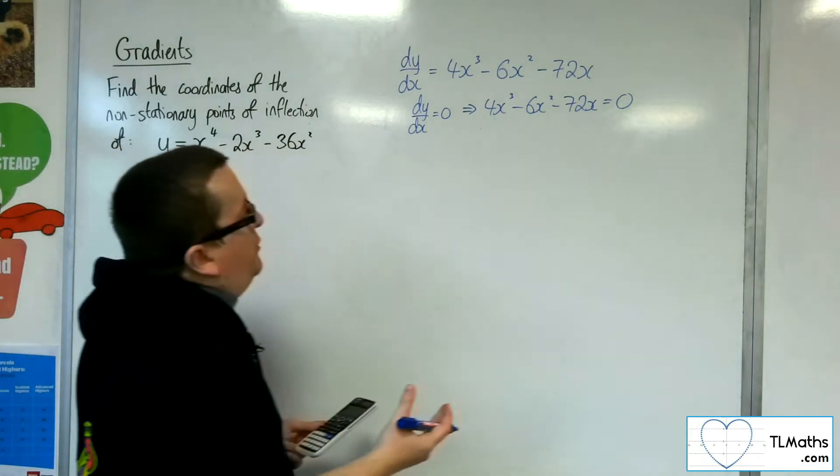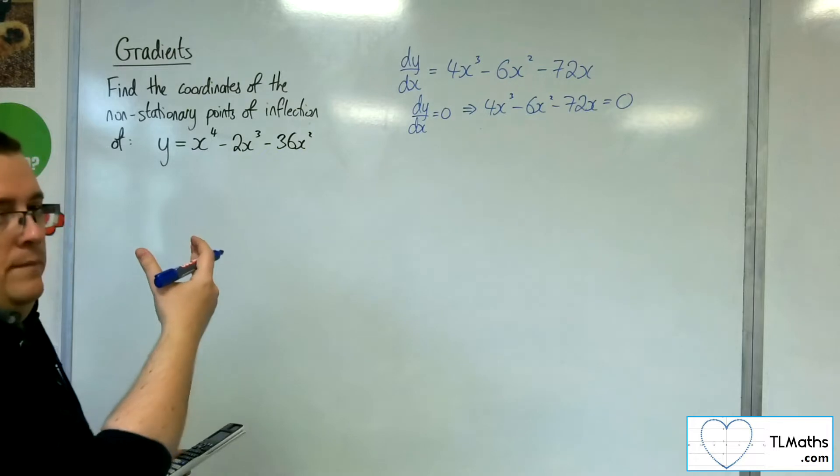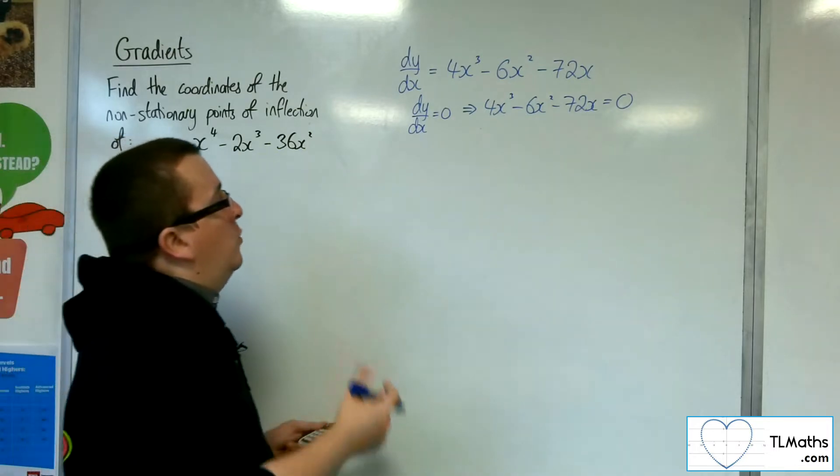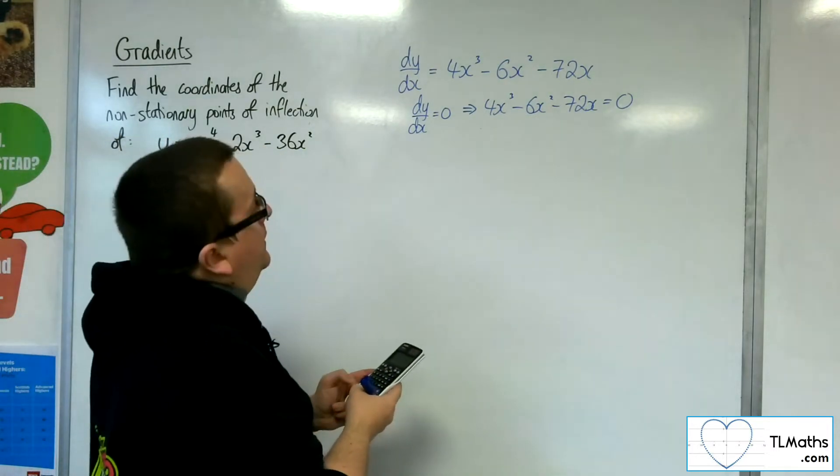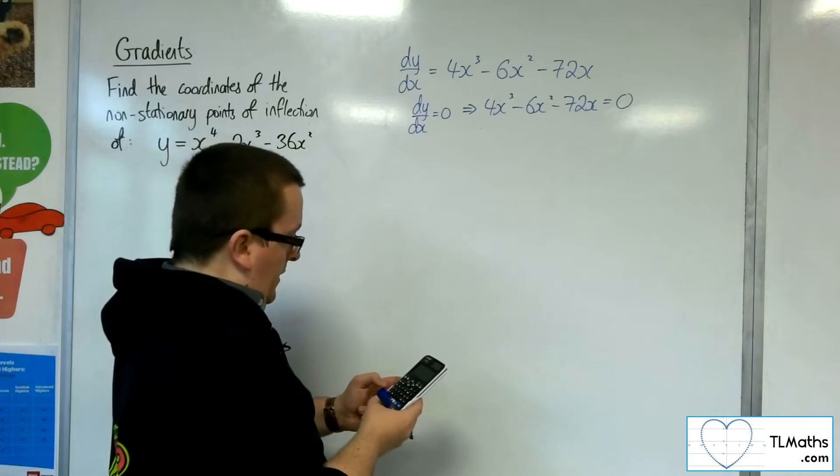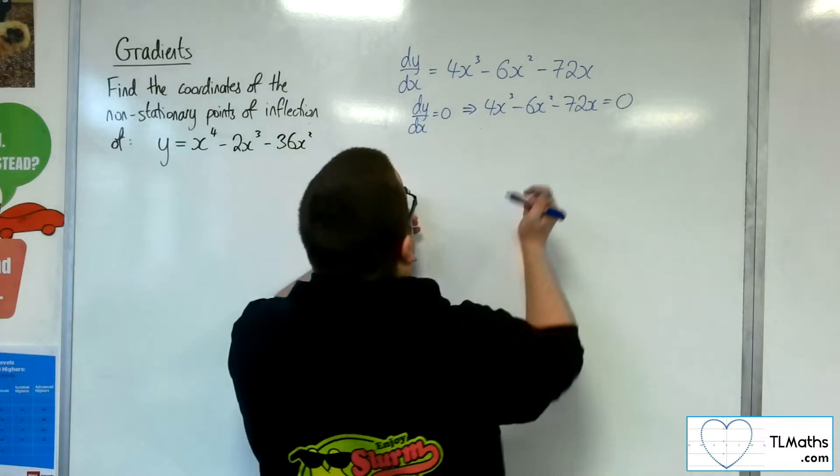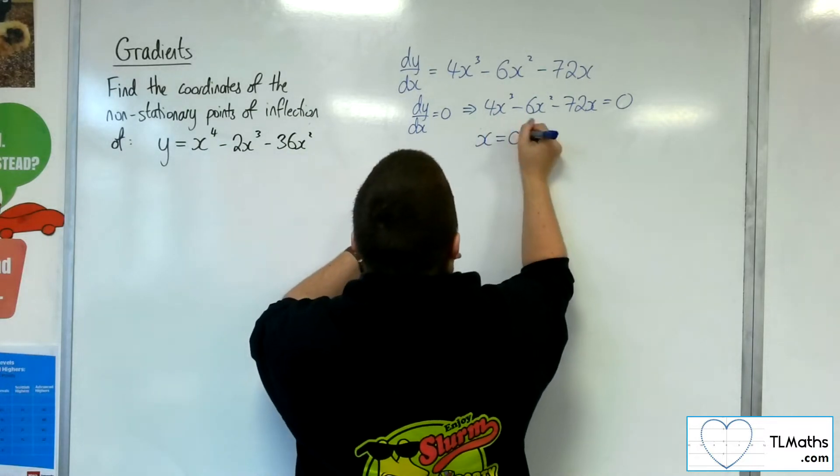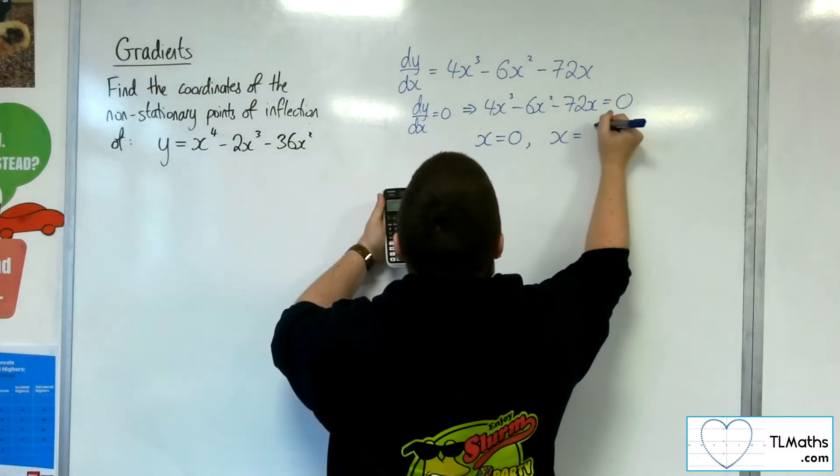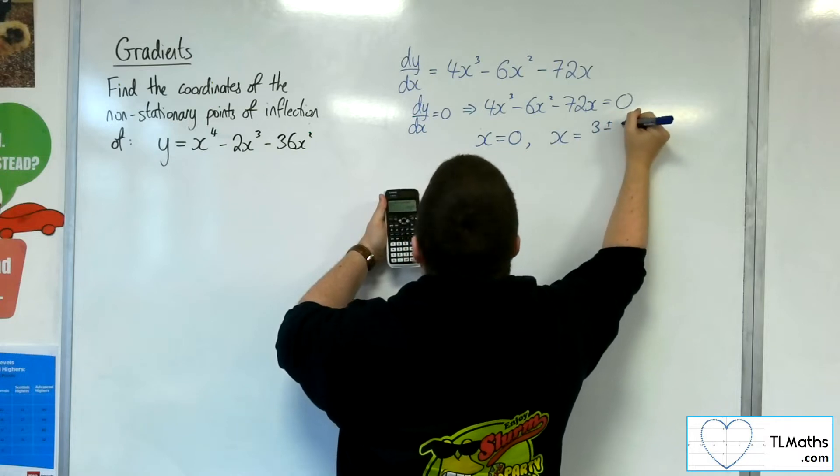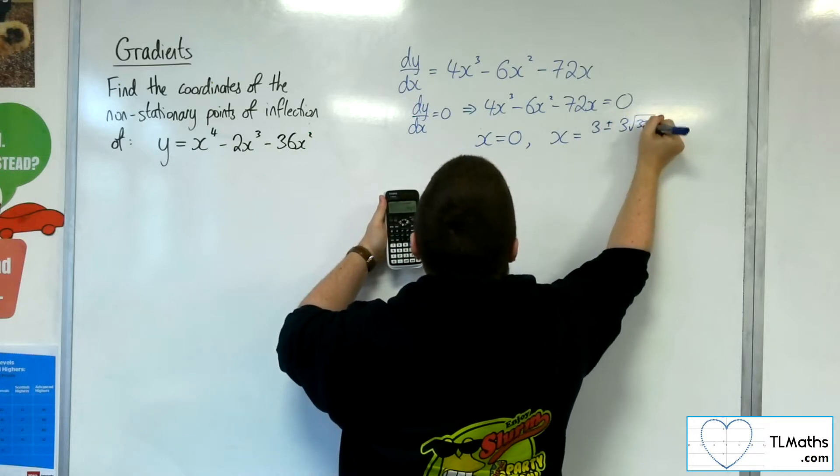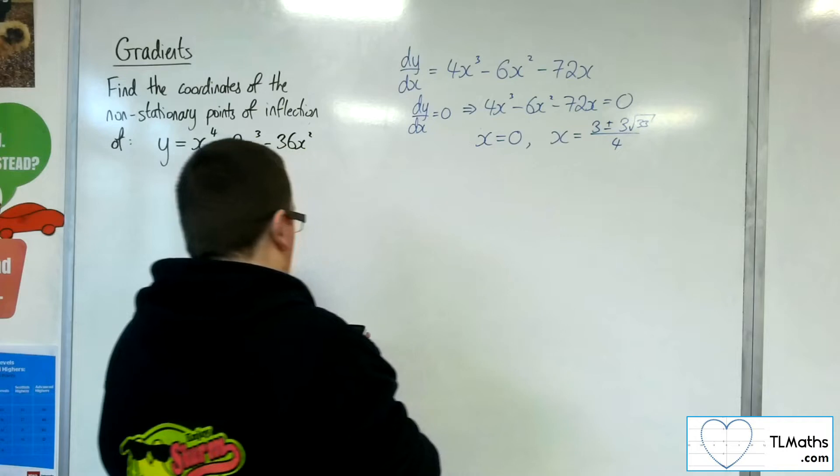If you wanted to do this algebraically, factor the x out and then factorise the quadratic that you have left. So 4 minus 6 minus 72 and 0. Right, so we get x is 0, or x is 3 plus or minus 3 root 33 over 4.